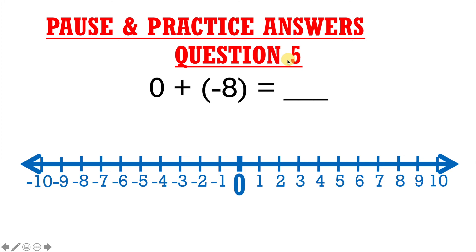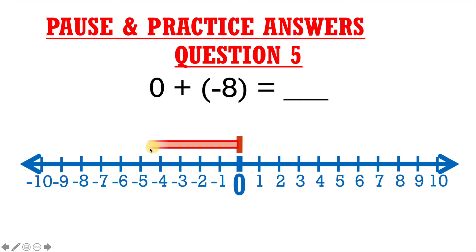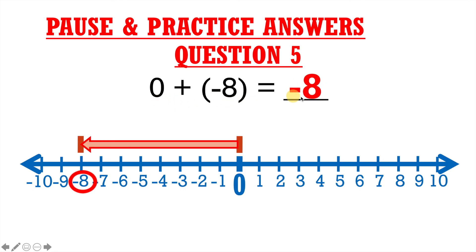Question 5: 0 plus negative 8 equals blank. Normally we start at 0 and go to our starting point, but since our starting point is 0, we don't even need that first arrow. So we go straight from 0 to negative 8, put a dash over there, and that's where we land. Our final answer is 0 plus negative 8 equals negative 8.